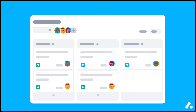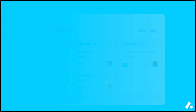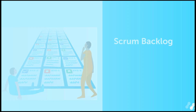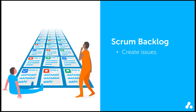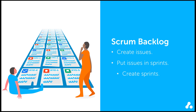As with most Scrum projects, work in a Scrum next-gen project begins in the backlog, where you add issues your team needs to complete. Your backlog is your to-do list. You can add items to your backlog and then drag them to a sprint, or you can create a sprint directly from your backlog.